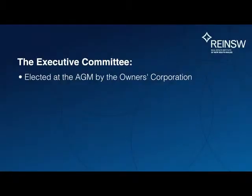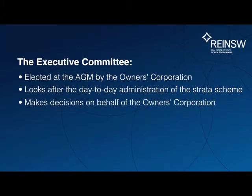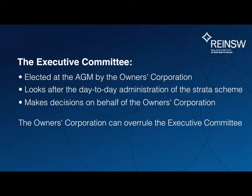The executive committee is elected each year at the annual general meeting by the owners corporation. It's the smaller group of owners that looks after the day-to-day administration of the strata scheme and is elected to make decisions on behalf of the larger group. The owners corporation can overrule the executive committee if they are dissatisfied with decisions made. As an owner, you can become part of the executive committee by nominating yourself at the annual general meeting.